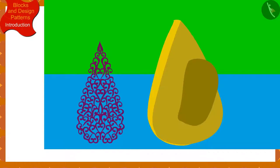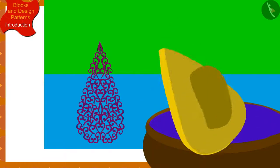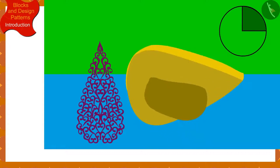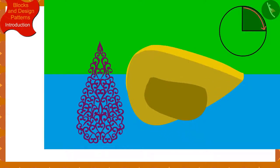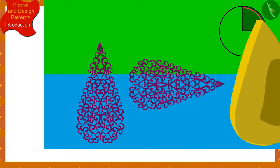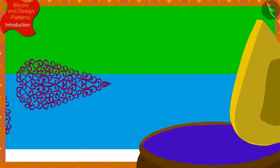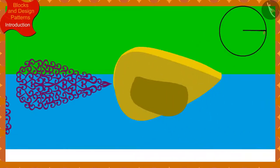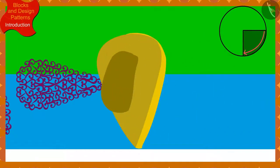She then made a second impression by dipping the block in the box of color again, this time rotating the block a quarter in the clockwise direction. Banno continued to make the design on Chanda's saree by every time dipping the block in the box of color and rotating it a quarter from the previous impression.